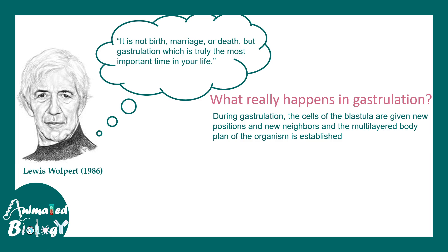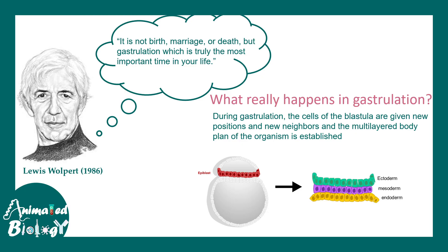During the gastrulation process, the cells of the blastula are given new positions. They migrate into a new neighborhood in a very coordinated fashion, and that's the key time to establish body axis and different germ layers. The cells of the epiblast are reorganized in a coordinated fashion to give rise to layers like endoderm, ectoderm and mesoderm. In short, that is the process of gastrulation.